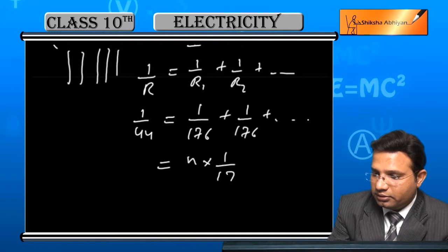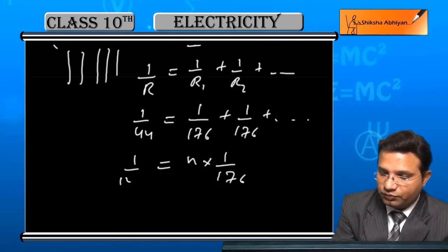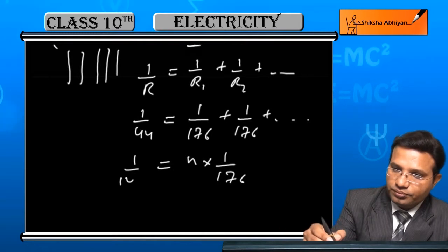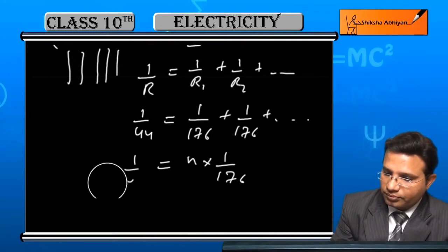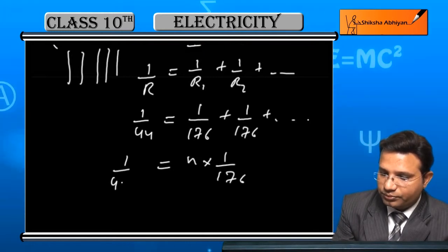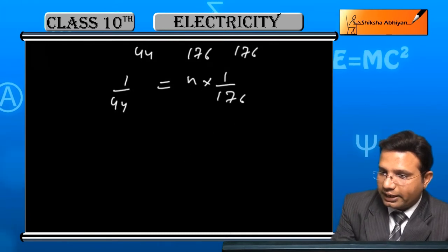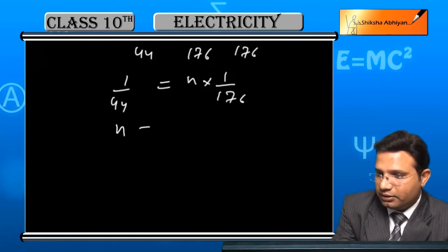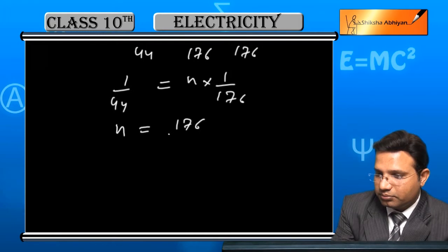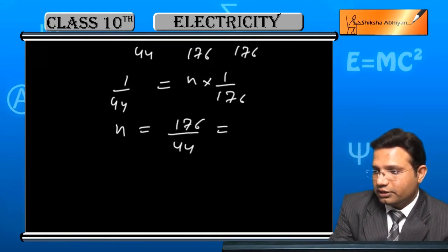So, this will be like this and here it is 1 by 44, 1 by 44. So, we are required to only calculate n. So, n will be 176 by 44 which is nearly 4.